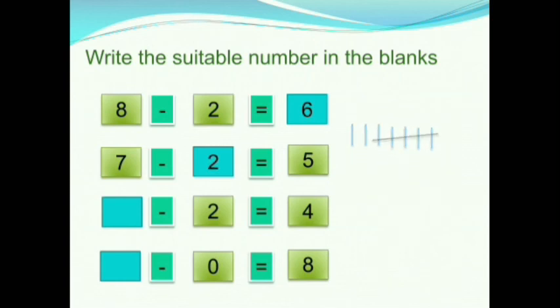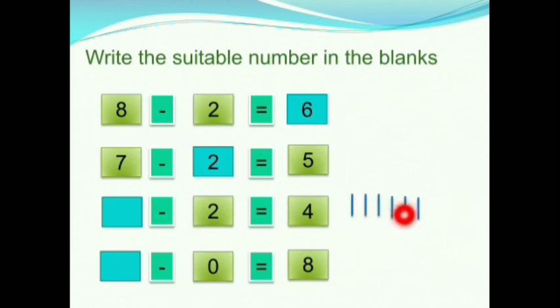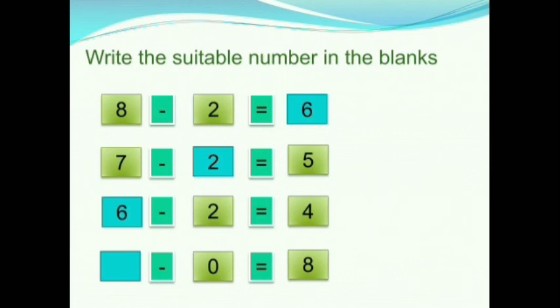Therefore, 7 minus 2 is equals to 5. The next question is dash minus 2 equals to 4. Here, we want our answer to be 4. We will draw 4 lines for it. We have 2 in our question, so we will draw 2 more lines. Totally how many lines are there? 1, 2, 3, 4, 5, 6. Totally 6 lines are there. So the missing number is 6. Therefore, 6 minus 2 is equals to 4.